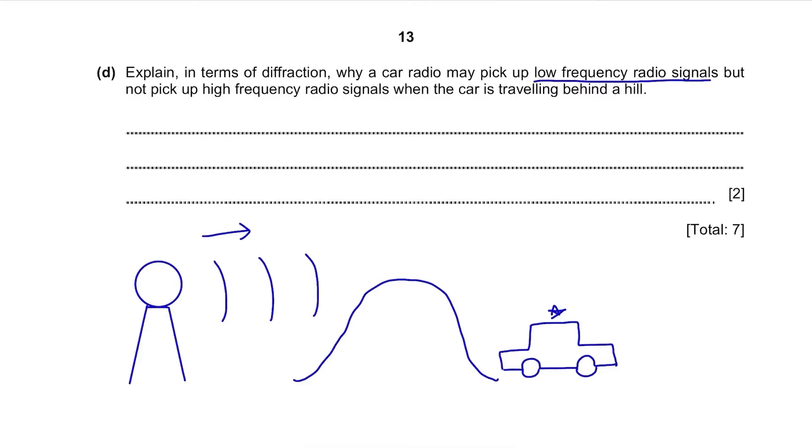It's because low frequency signals have longer wavelengths, and when there are long wavelengths, the signals diffract more, allowing the signals to move across the hill and reach the car. Low frequency signals have longer wavelengths than high frequency signals, and longer wavelength signals diffract more.